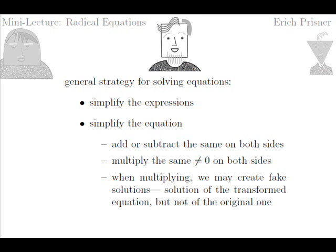In such a case we have to check explicitly whether x equals one is a solution. If not, we call it a fake solution — a solution to the transformed equation, but not of the original one. Adding, subtracting, or multiplying the same non-zero value on both sides of the equation is allowed.